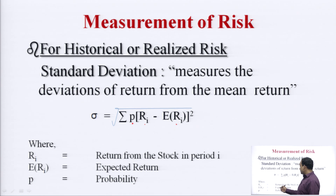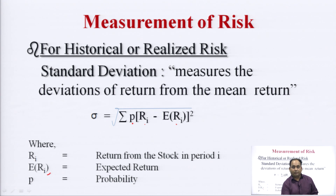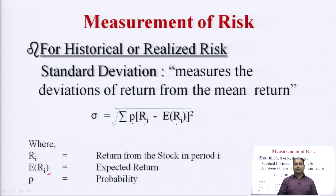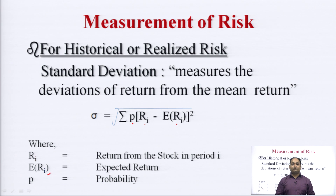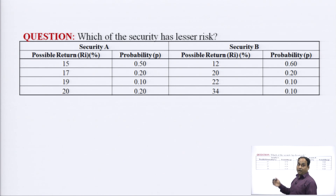Here, R_i denotes the return from the stock in period i, E(R) denotes the expected return, and P denotes the probability. We will have a numerical problem for assessing risk — how we can measure the risk between securities, and how we can minimize the risk with the help of standard deviation. This is the given problem: which security has lesser risk? We have to compare security A and security B.